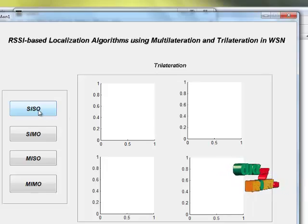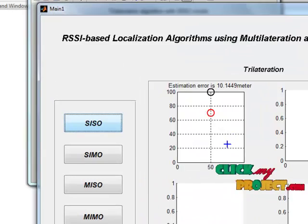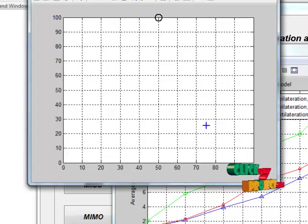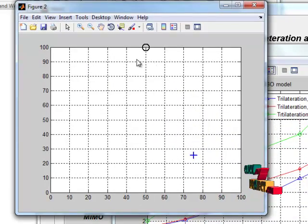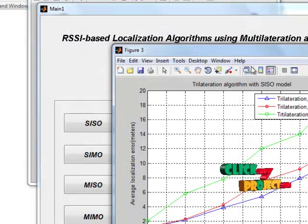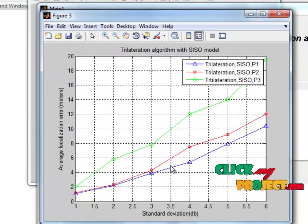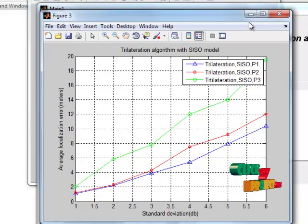Here again we are going to see for single input with single output. See single input single output. This is the graph plotted for trilateration with SISO model.